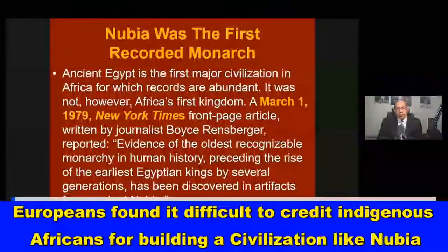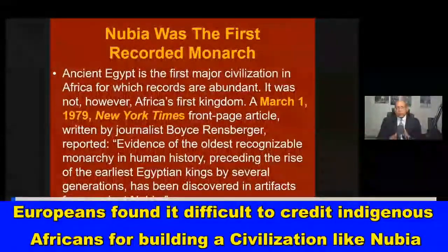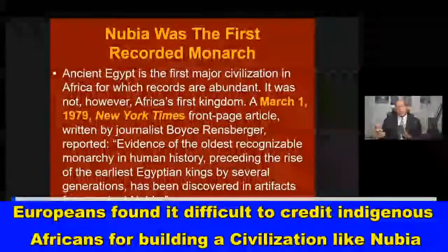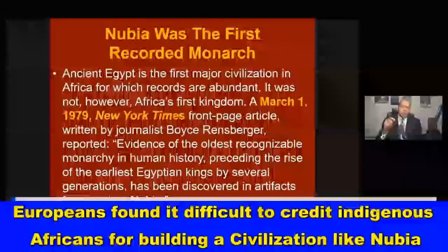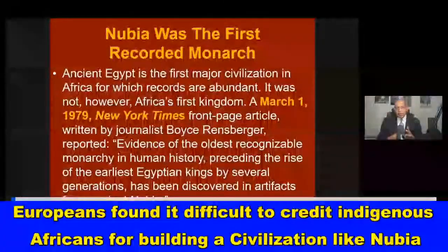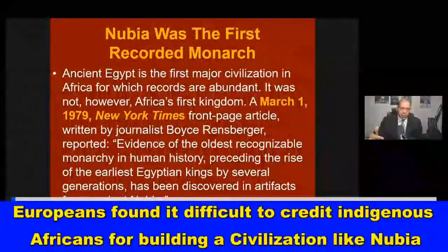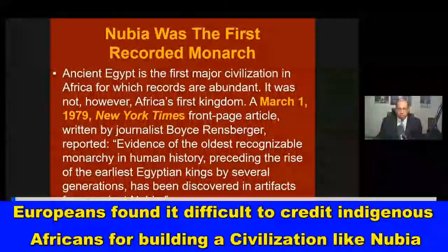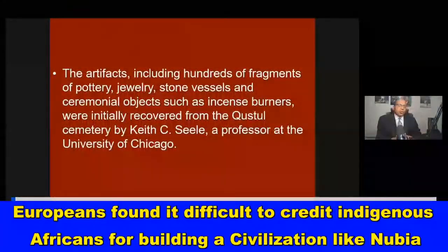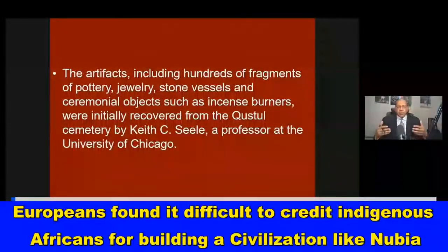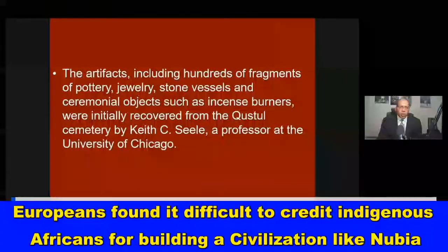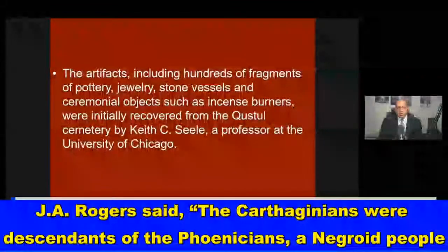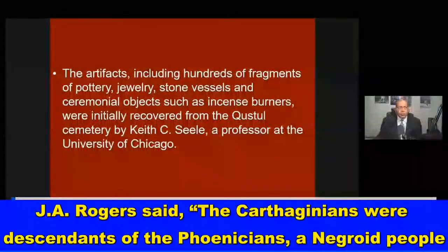Nubia was the first recorded monarchy in history. A March 1st, 1979 New York Times front-page article reported: 'Evidence of the oldest recognizable monarchy in human history, preceding the rise of the earliest Egyptian kings by several generations, has been discovered in artifacts from ancient Nubia.' The artifacts — including hundreds of fragments of pottery, jewelry, stone vessels, and ceremonial objects such as incense burners — were initially recovered from a cemetery by Keith C. Seele, a professor at the University of Chicago.